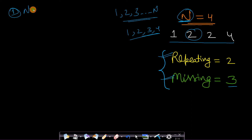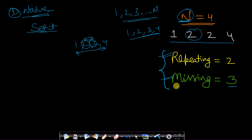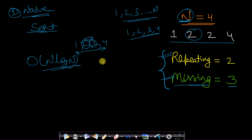One naive approach or brute force approach is to do sorting on the entire array. Once the elements are sorted — in this case they will be 1, 2, 2, 4 — you can just traverse from left to right and find which number is repeating, since repeating numbers will be adjacent. You can also find which number is missing. This is a very simple way and will take O(n log n) time.